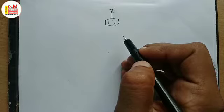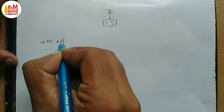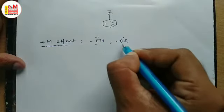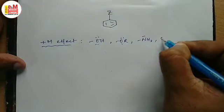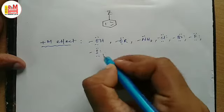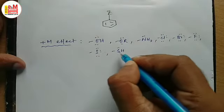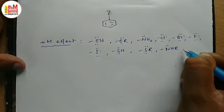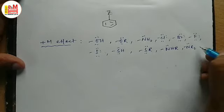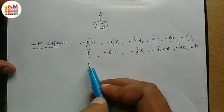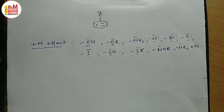Let us consider some groups or atoms with plus M effect: OH, NH2, Cl, Br, F, I, SH, SR, NHR, NR2. Basically the groups or atoms with lone pairs over them are mainly considered here, which can take part in pi electronic displacement.